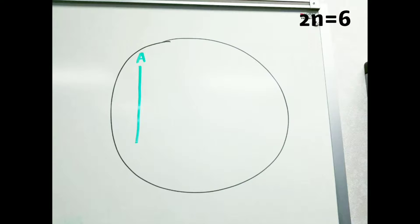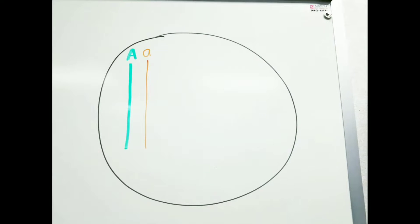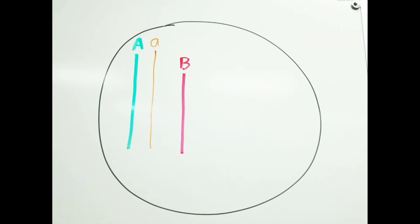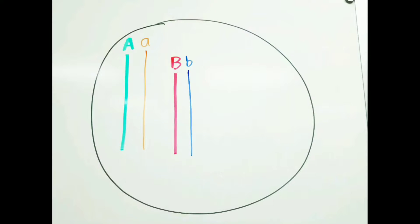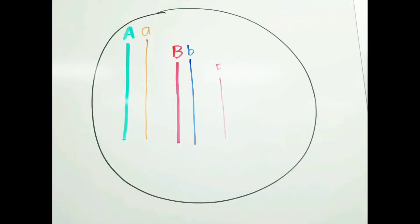The cell first starts off as a diploid 2n equals 6 germ cell. This means that there are three sets of chromosome pairs, also known as homologous pairs. One from your mom and one from your dad.